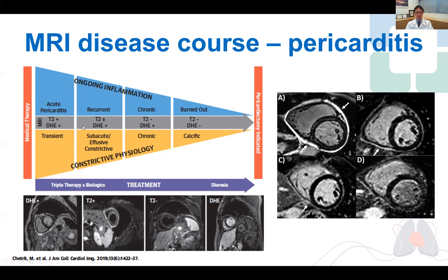And then calcific. T2-STIR's elevated signal is positive initially, but then goes away relatively quickly, while pericardial delayed enhancement lingers for a longer period of time until the burnt-out phase. Below are some examples of positive pericardial enhancement in T2-STIR as well as negative. On the right is an example of a patient with acute pericarditis and significant pericardial enhancement, which improved over time to resolution with adequate anti-inflammatory therapy.